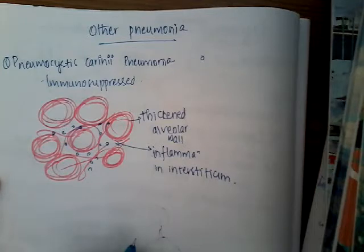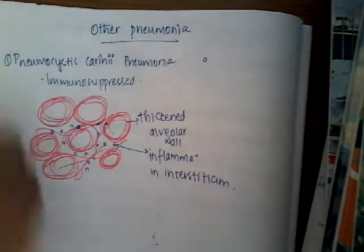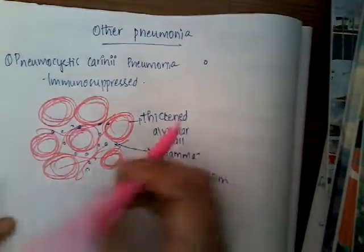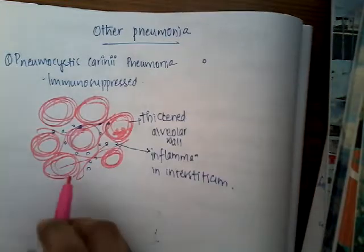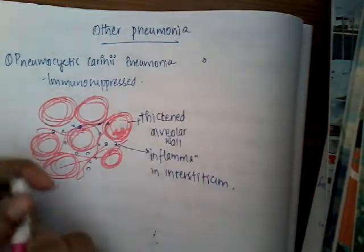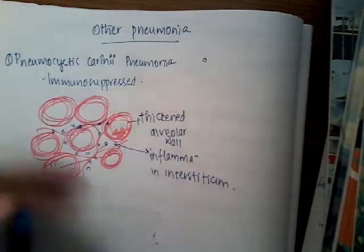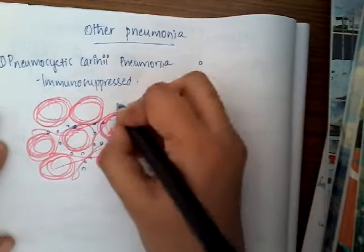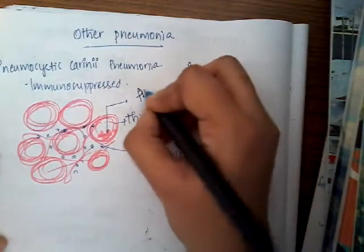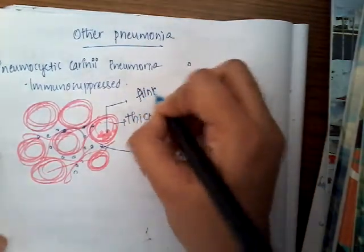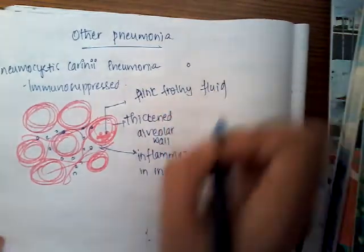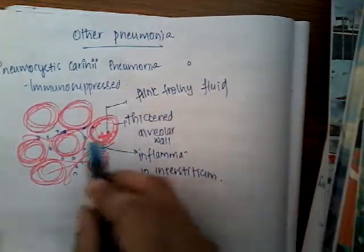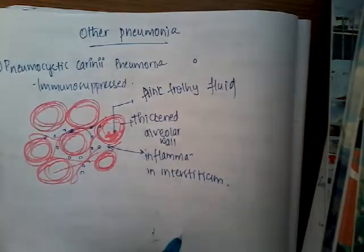It also has alveolar infiltrate sometimes. In the alveoli, pink frothy fluid in the alveolar lumen can be seen. So it has both interstitial and alveolar pneumonia, but mostly interstitial pneumonia.